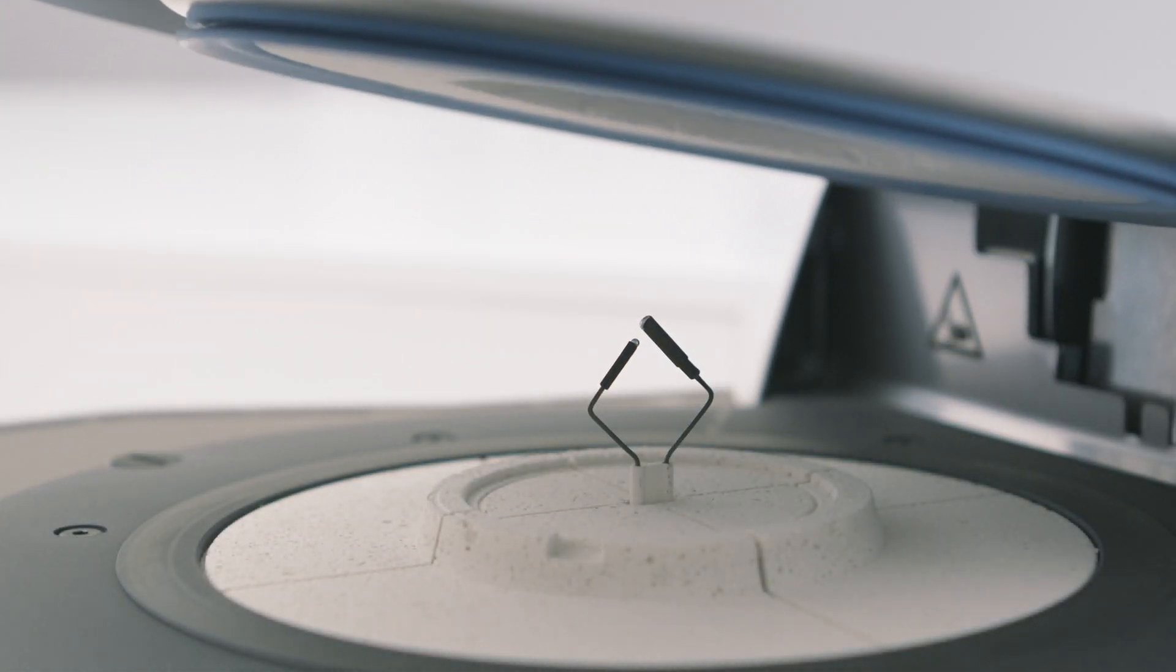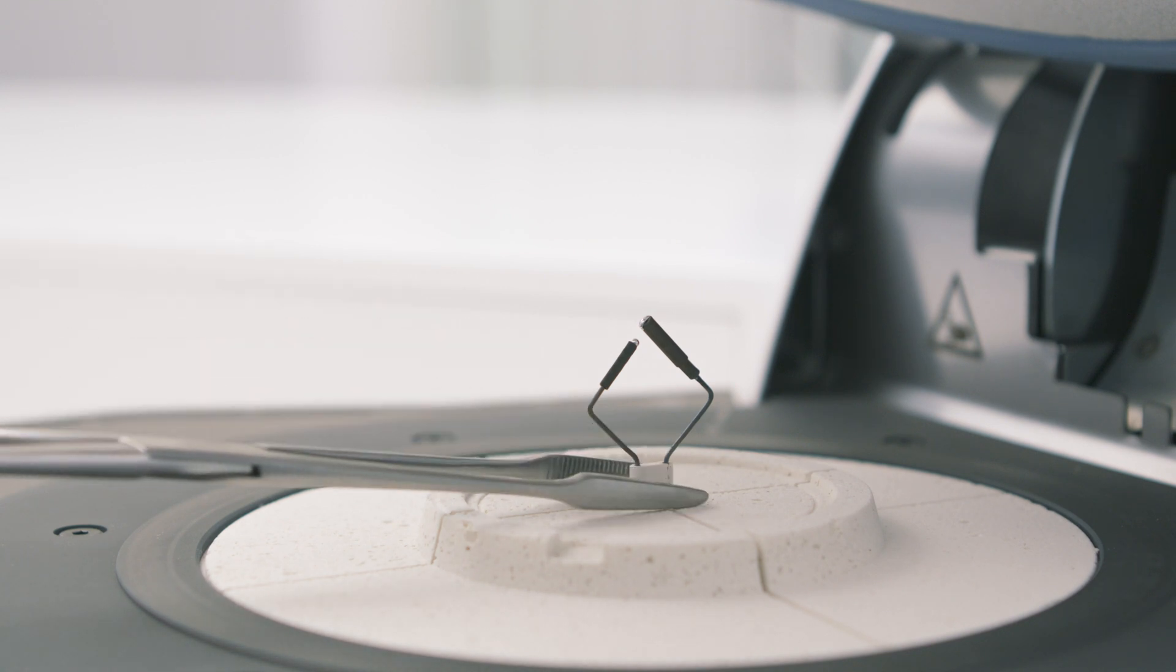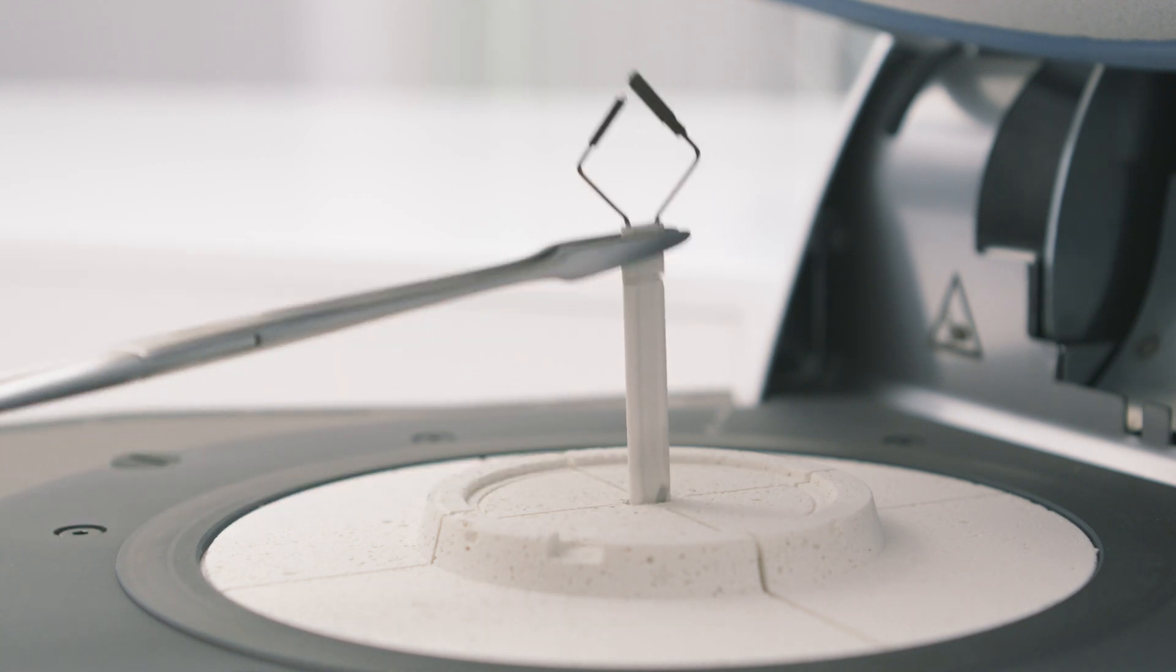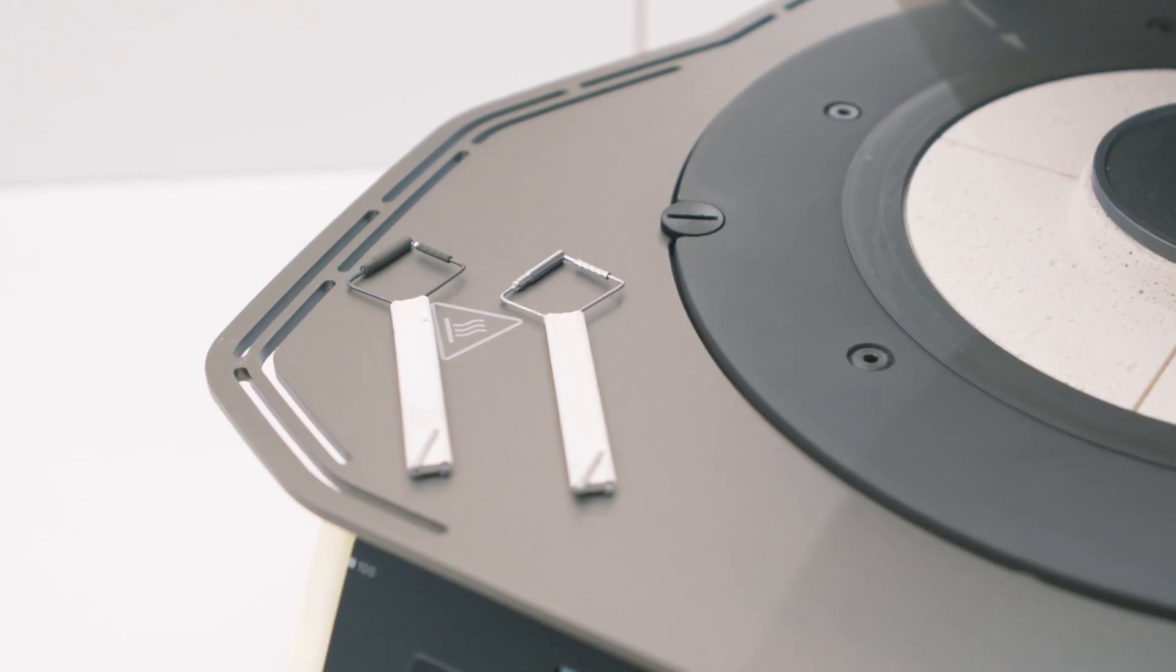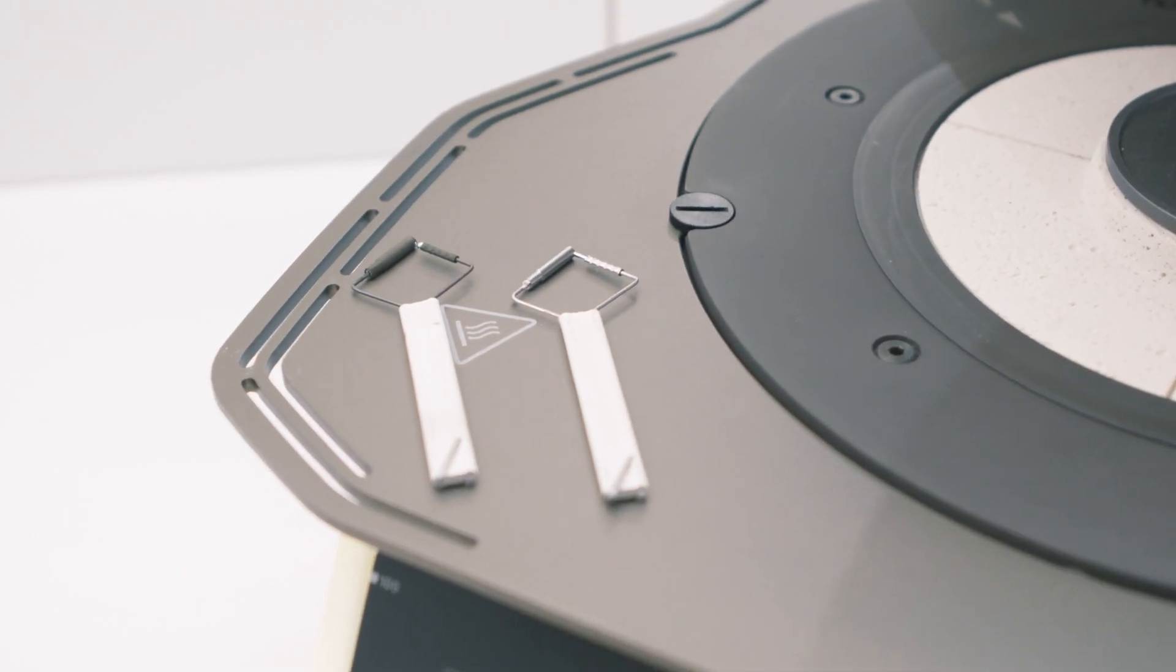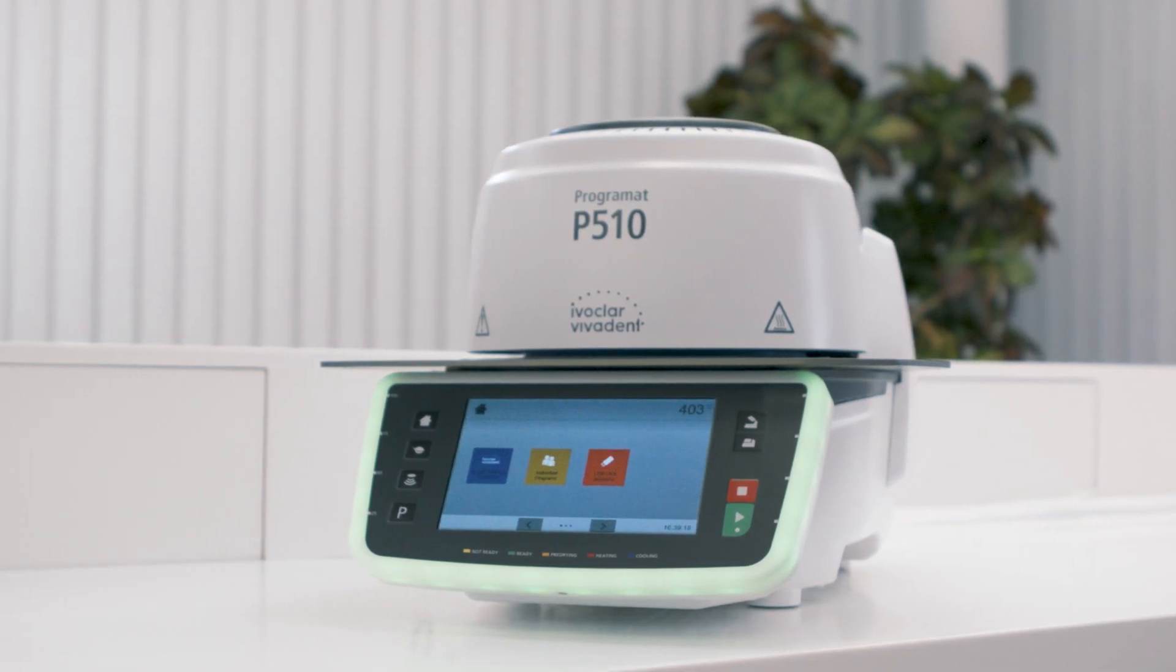Then open the furnace head and remove the ATK2 sample using the firing tongs and place it on the cooling plate. The ATK2 sample can only be used once. Use a new ATK2 for the next calibration. Your Programat is now calibrated and ready for new applications.